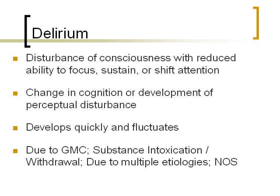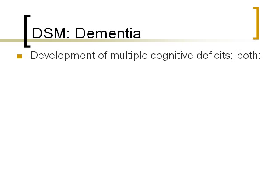So delirium is just kind of being cognitively out of it, with some waxing and waning, but most of the time not being able to think clearly. Now, dementia is different from delirium — both involve cognitive deficits, but they differ in important ways.